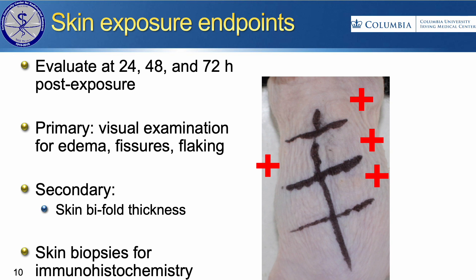After that initial mouse exposure, we'll expose a group of eight mice based on the results of the initial mouse. So as an example, at 240 nanometers — if we see a positive — we would then follow up with five different doses to try and narrow down exactly where the erythema threshold starts.